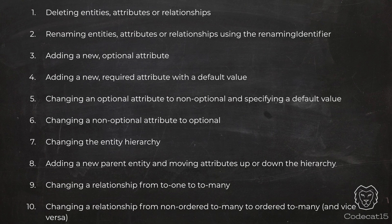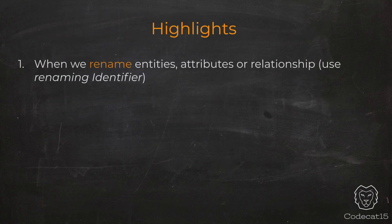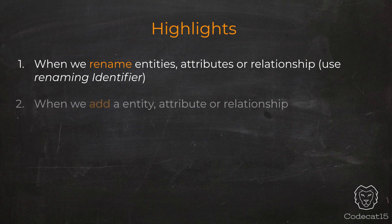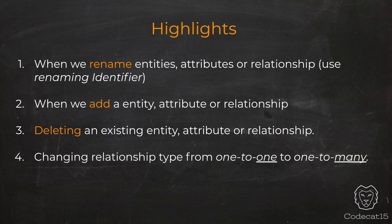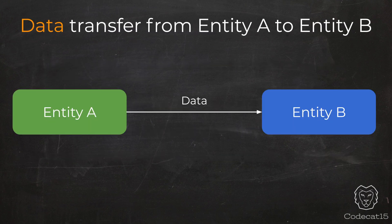In this session we'll understand when to use lightweight migration. As per Apple's developer documentation, Core Data will perform lightweight migration under the following conditions. There are many points, but let me highlight the important ones: when you rename entities, attributes, or relationships — for renaming we use the renaming identifier, which is a simple configuration we'll see in today's demo. When you add any entity, attribute, or relationship. When you delete any existing entity, attribute, or relationship. And there is one more highlight: when you change a relationship type from one-to-one to one-to-many. However, if you are moving data from one entity to another, then in that case we should choose to perform heavyweight migration.